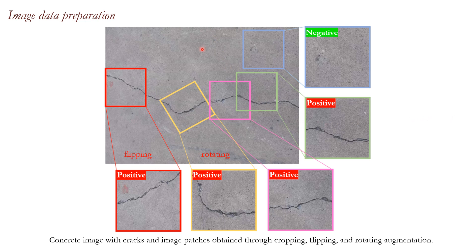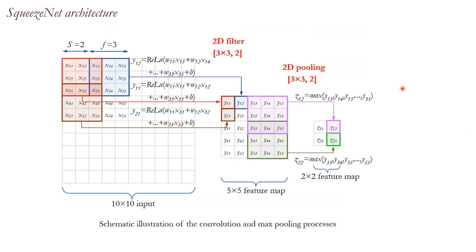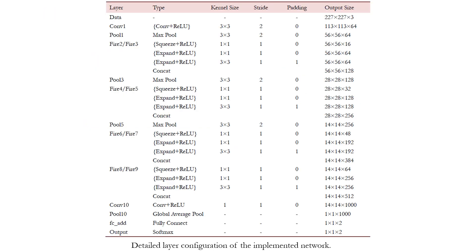The image is taken using a smartphone and the image dataset is prepared through a particular strategy. This figure briefly explains the convolution and the max pooling processes involving SqueezeNet. Here's the detailed layer configuration of the implemented network.